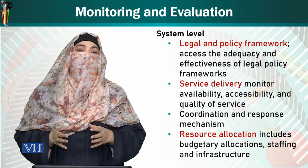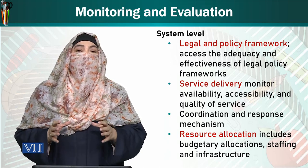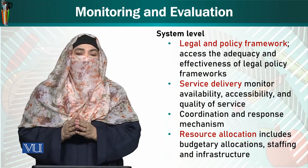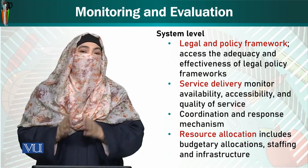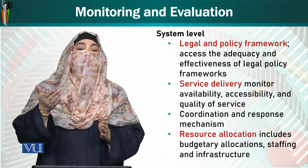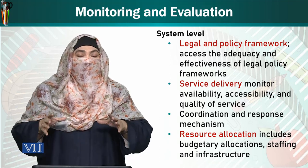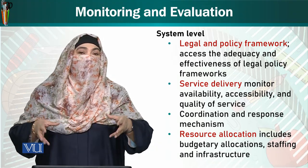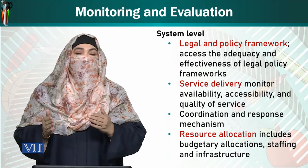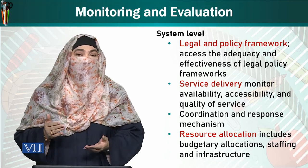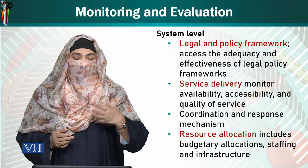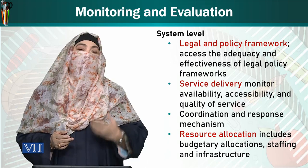Coordination and response mechanisms are also monitored. The system means that many institutions work together to protect children from violence. So it is assessed who coordinated with whom, who provided assistance in response, how much feedback was given, what were the methods of collaboration, and how they pooled all their synergies together. All of this is assessed through different benchmarks. Resource allocation includes budgetary allocations, staffing, and infrastructure.